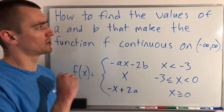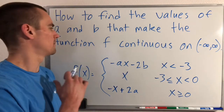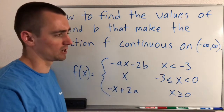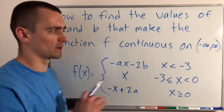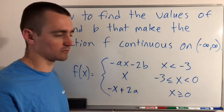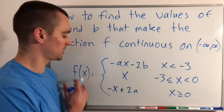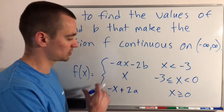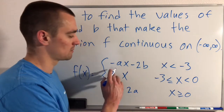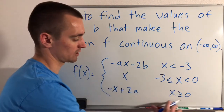So here's the problem. I'm going to show you how to find the values of a and b that make the function f continuous on negative infinity to infinity — basically continuous everywhere, or continuous for all x values. We have this piecewise function which is broken down into three pieces, defined by three separate functions within each of three domains.